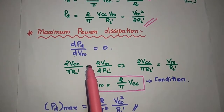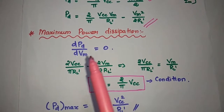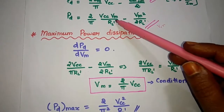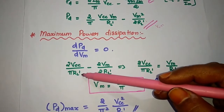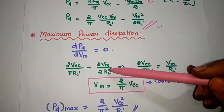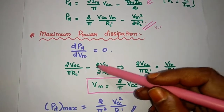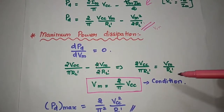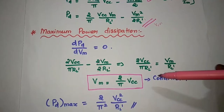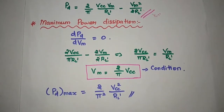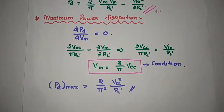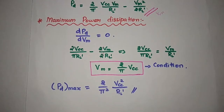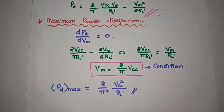To find the maximum power dissipation, we differentiate the power dissipation expression with respect to Vm and set it equal to 0. Differentiating, the first term gives 2VCC/(π × RL') and the second term gives Vm/RL'. Setting the derivative to zero: 2VCC/(π × RL') = Vm/RL', which gives the condition Vm = 2VCC/π. Substituting this back, the maximum power dissipation equals 2VCC²/(π² × RL').